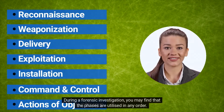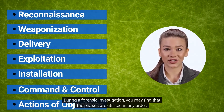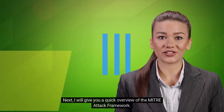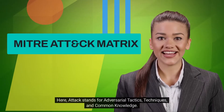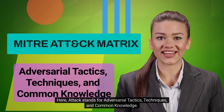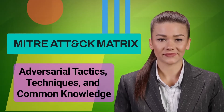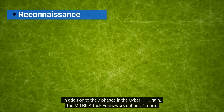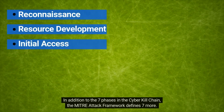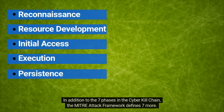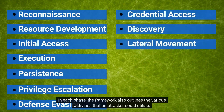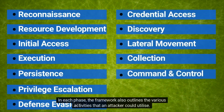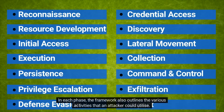During a forensic investigation, you may find that the phases are utilized in any order. Next, I will give you a quick overview of the MITRE ATT&CK framework. ATT&CK stands for Adversarial Tactics, Techniques, and Common Knowledge. In addition to the seven phases in the Cyber Kill Chain, the MITRE ATT&CK framework defines seven more. The common phases are named differently in each, and the framework also outlines the various activities that an attacker could utilize.